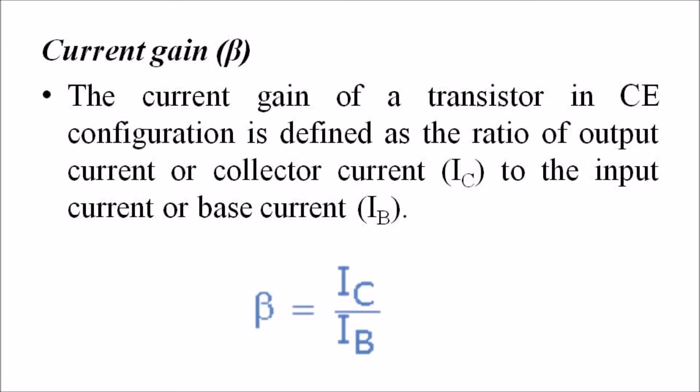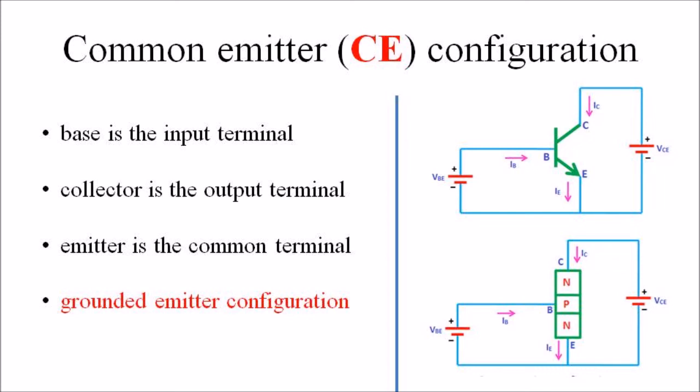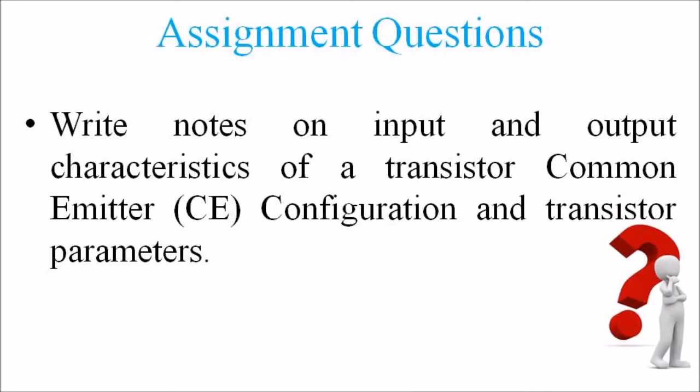My students, these are the different characteristics of the common emitter configuration of a transistor. We have discussed the common emitter configuration, the input characteristic, output characteristic, and different configuration parameters. Hope you have understood this topic. Kindly go through the assignment question: write notes on common emitter configuration with input characteristic, output characteristic, and current gain of CE configuration.